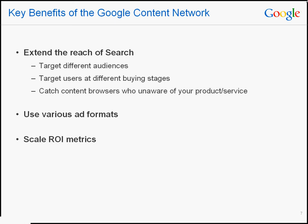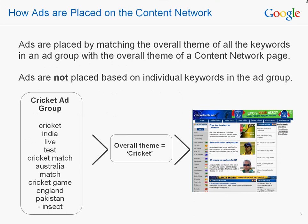Taking advantage of different ad formats will allow you to find out which format works best for you. You may also be able to scale your return on investment metrics by extending your reach, especially if you're unable to obtain any more traffic through the search network. Ads on Google's content network are placed according to the overall theme of all the keywords in that ad group, rather than being triggered by an individual keyword being searched for on google.com.au.